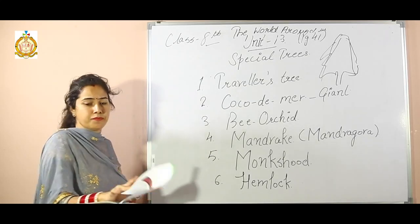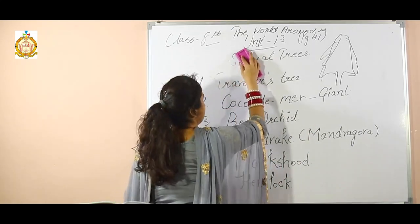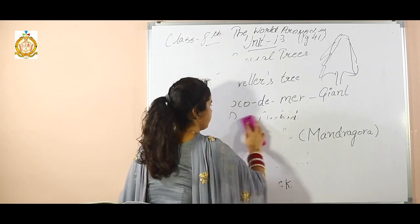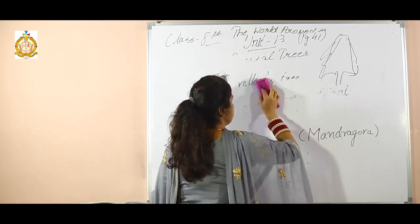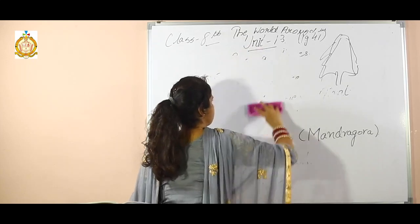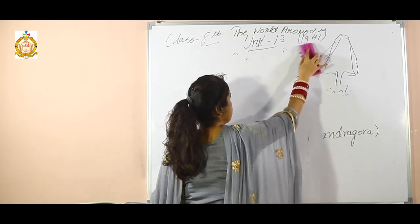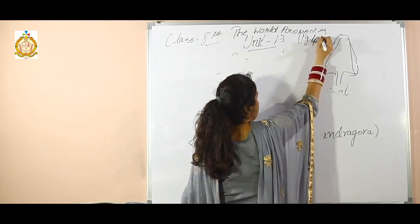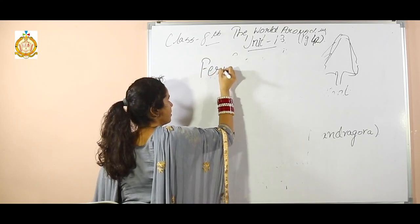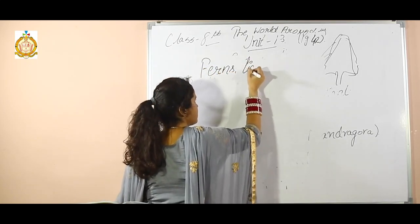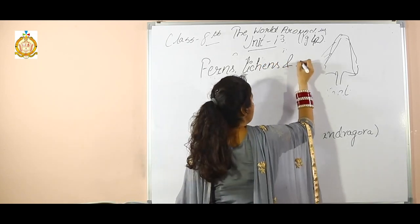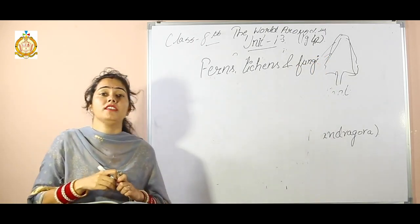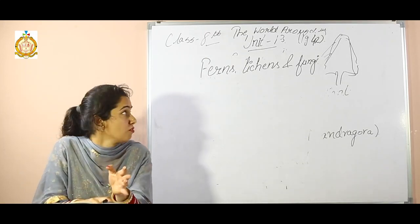Now the next is page number 42, and the sub-chapter is ferns, lichens, and fungi. What are these? These all are microorganisms.